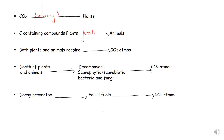Both plants and animals respire and that releases carbon dioxide into the atmosphere — we label this arrow 'respiration.' When the plants and animals die and get broken down by the decomposers, that is decomposition. And when the decomposers break down the glucose to release carbon dioxide back into the atmosphere, that is also respiration.